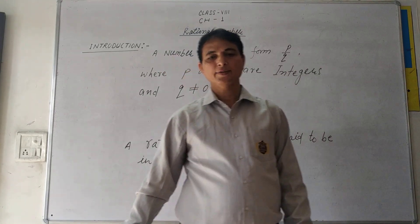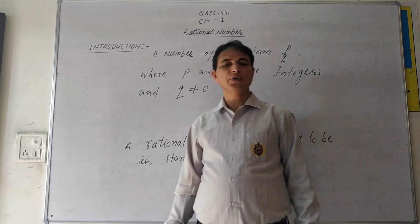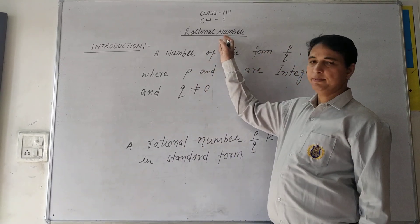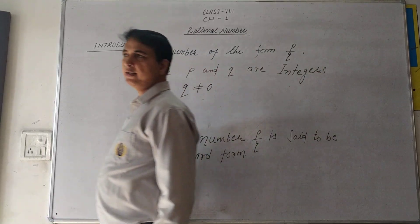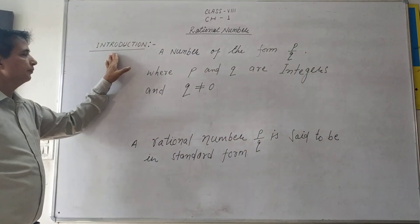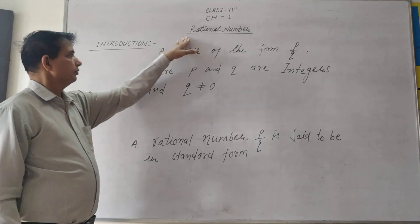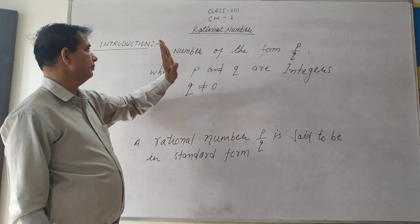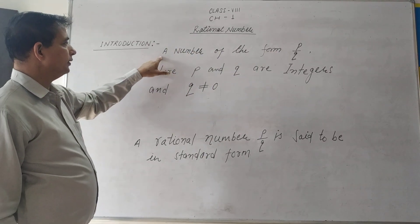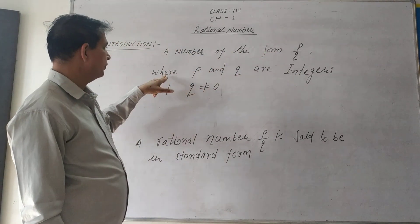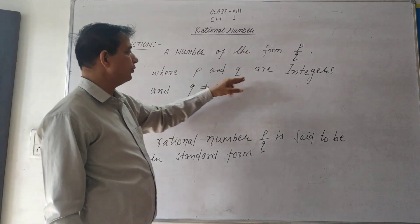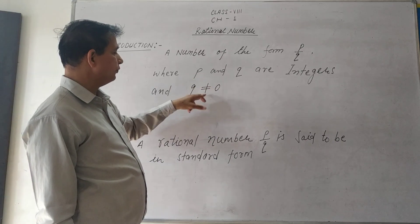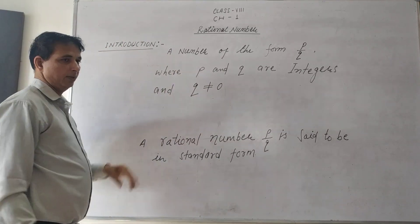Welcome students. Today we are going to study chapter 1, rational numbers. So let's start with the introduction. A number of the form p upon q, where p and q are integers and q is not equal to 0, are called rational numbers.